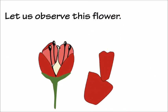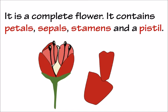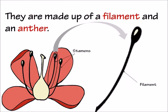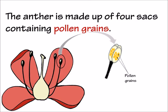Let us observe this flower. It is a complete flower. It contains petals, sepals, stamens, and a pistil. Stamens are the male reproductive organs. They are made up of a filament and an anther. The anther is made up of four sacs containing the pollen grains.